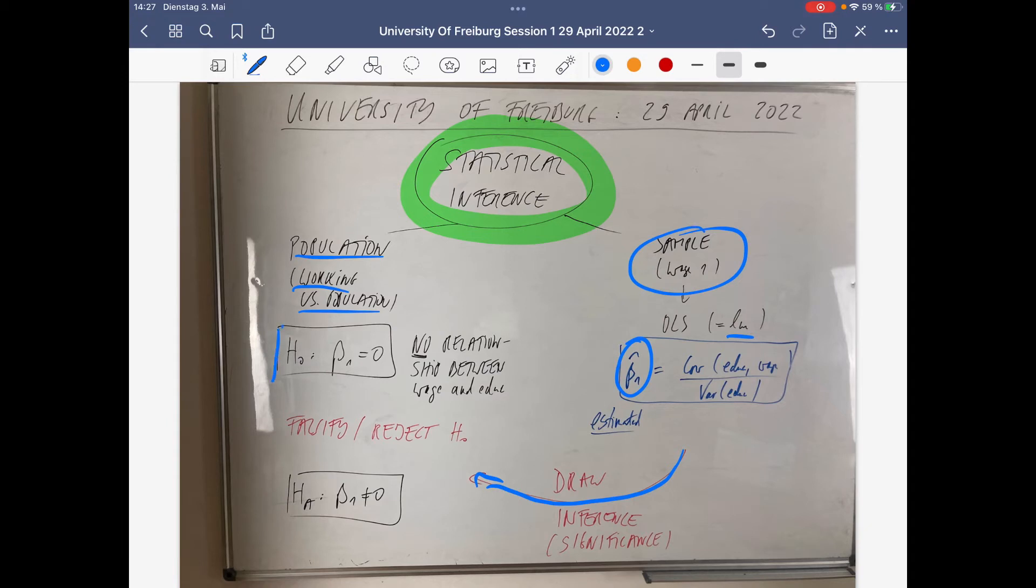We then check a hypothesis, in this case the beta 1 equals zero hypothesis, that is here shown in population values, and you want to reject it. If it's significant, if the regression coefficient is significant, then we can reject the H0.